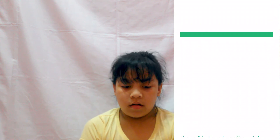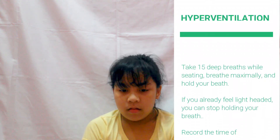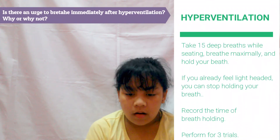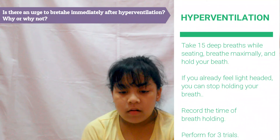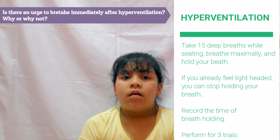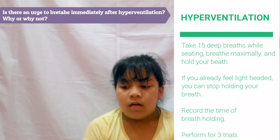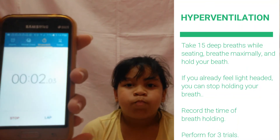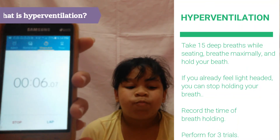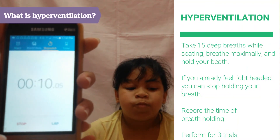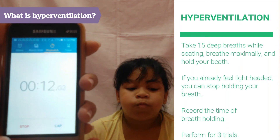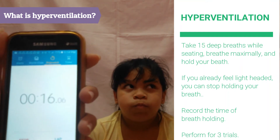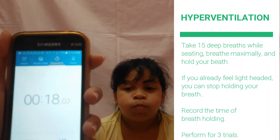Now for the second experiment, breathing maximally decreases carbon dioxide in the blood. Her brain interprets this as high oxygen level, thus there is no urge to inhale. Hyperventilation is characterized by rapid breathing. This is when you exhale more than you inhale, thus decreasing carbon dioxide in the blood.